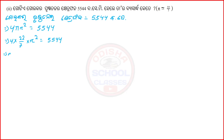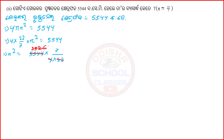That implies that R squared = 5544 divided by 7 by 22. How much is 5544? How much is 22? How much is 22? How much is 28?